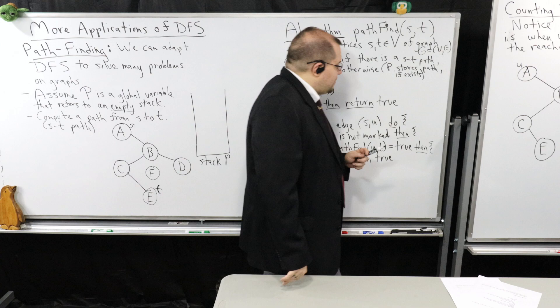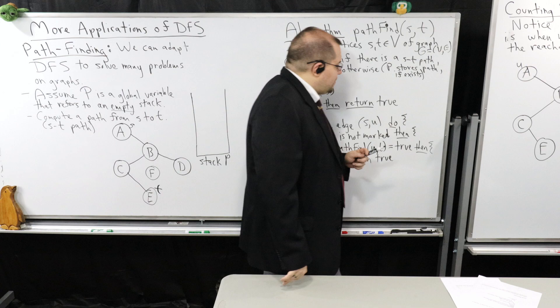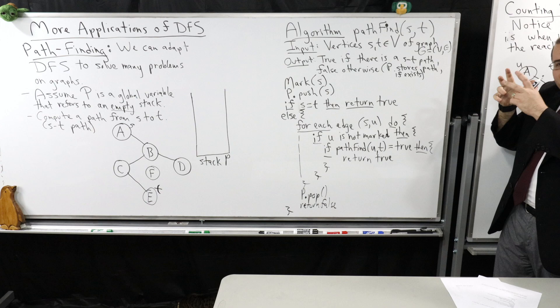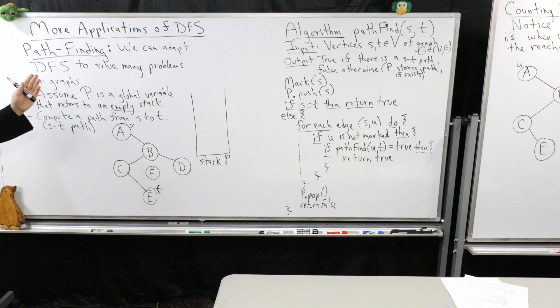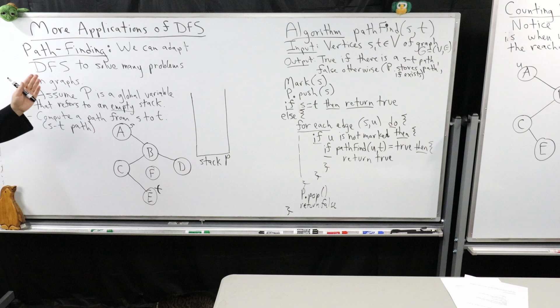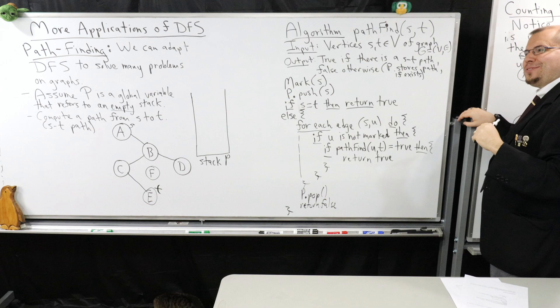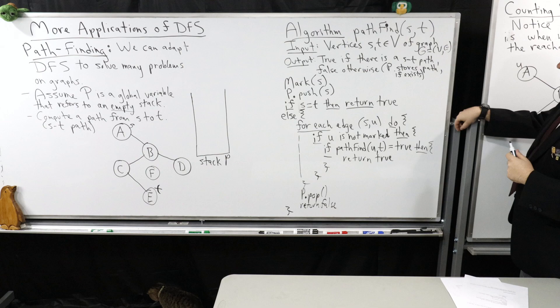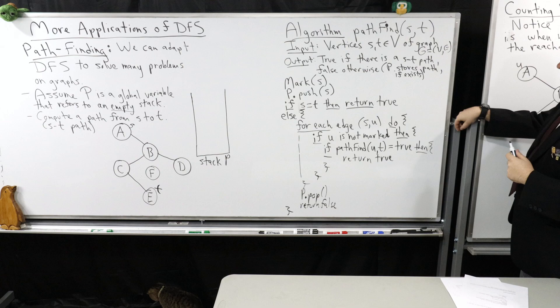Here's the idea. I'm going to start off by marking just like I did in DFS. Then I'm going to push the vertex S — this will always be where I have my start vertex. I'm employing recursion, so it's going to be each vertex I encounter along potential paths. If S equals T, meaning they're the same vertex, I'm going to return true. My output is a little different — I'm just going to say true if there's an ST path and false otherwise, and assume the stack P stores the path.